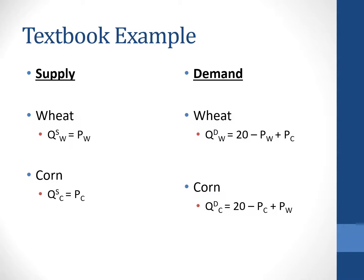Looking at these equations, we need to understand what's happening between wheat and corn. It might not look obvious at first, but the price of corn is impacting the demand for wheat, and vice versa — the price of wheat is impacting the quantity demanded for corn. These two goods are interrelated. When two goods are interrelated, they will either be substitutes or complements.